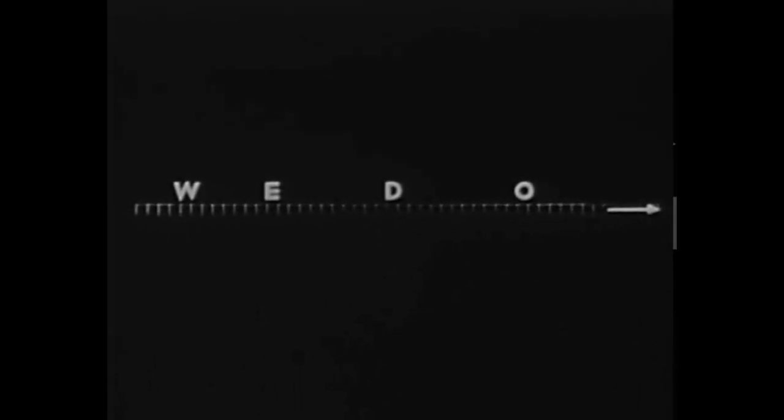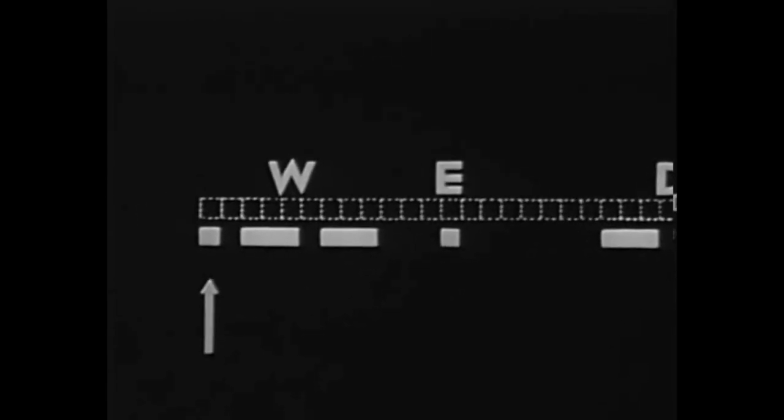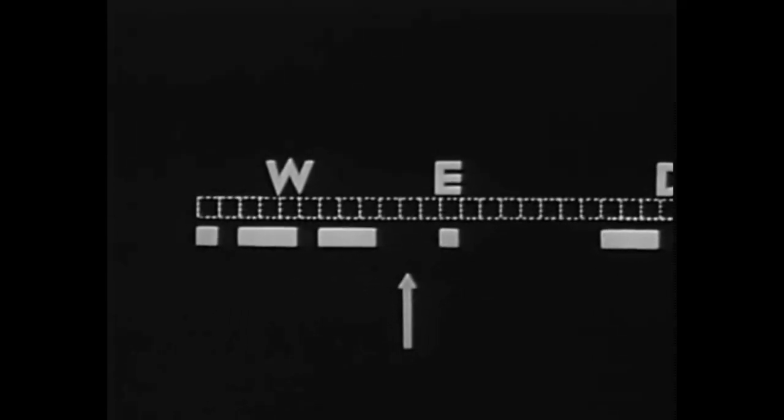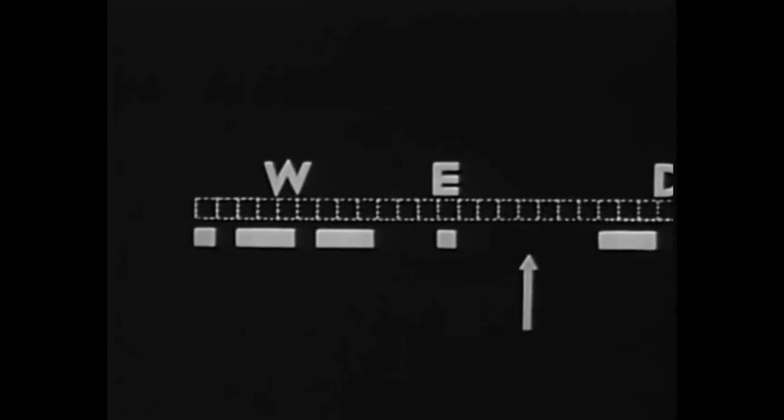These series of boxes make up the time scale, which will show you the correct time proportion of the dits, the dahs, and the various spaces. The white boxes represent the sounds heard — the dits and the dahs. The black boxes represent the spacing between the sounds. The dah is three times as long as the dit. The space between the dits and the dah that make up a letter is equal to one dit. The spacing between letters is equal to three dits or one dah. The spacing between words is equal to seven dits or two dahs. These are the basic elements of Morse code.